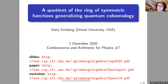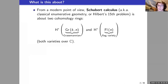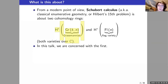There is a survey that I wrote for FPSAC back before there were this many results. This story starts with Schubert calculus, which from a modern perspective is about two cohomology rings: the cohomology ring of the Grassmannian and that of the flag variety, both over the complex numbers. We're only going to be looking at the first one in this talk.